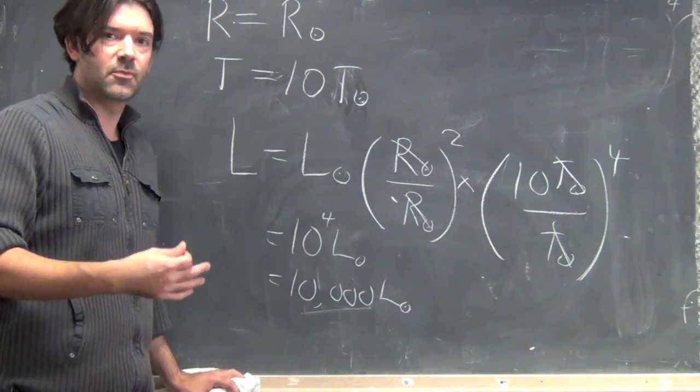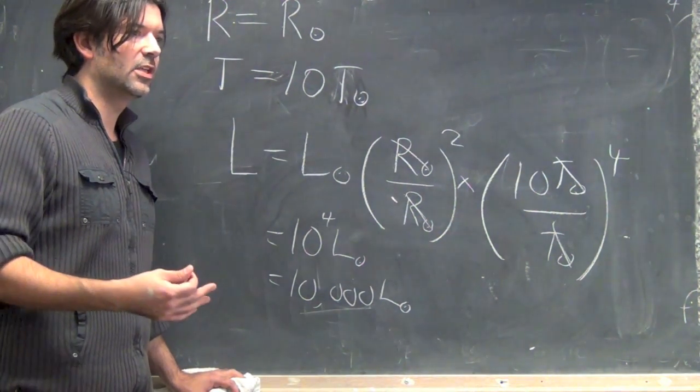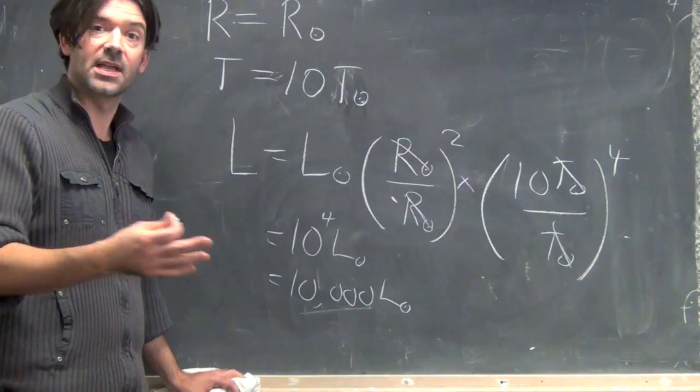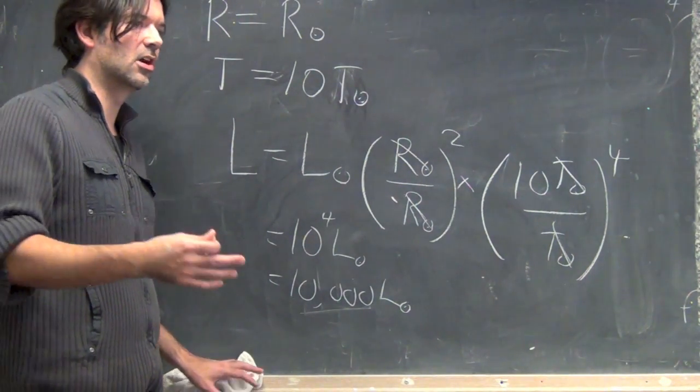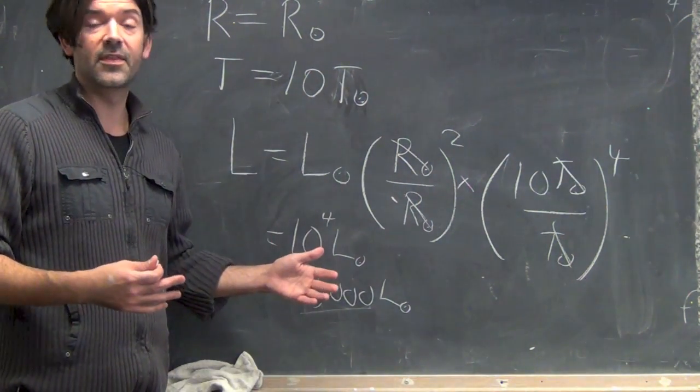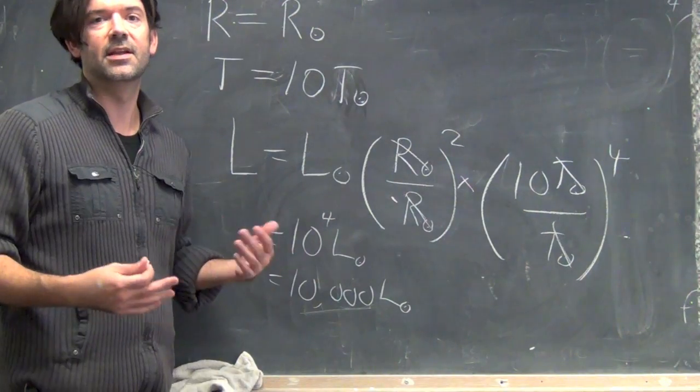So, this is the expression that you can then use to evaluate as you change the temperature or size of a star, or talk about a star of different temperatures and sizes, whether they should be more or less luminous than other ones.